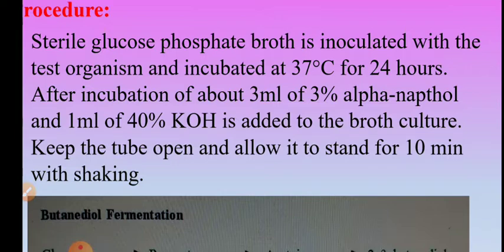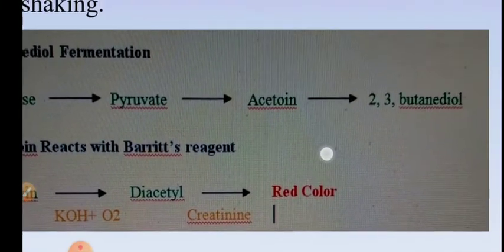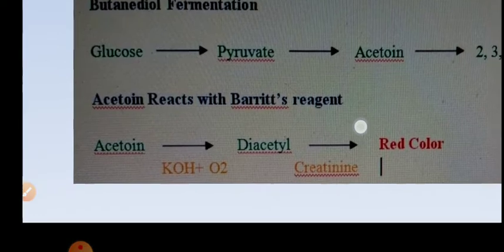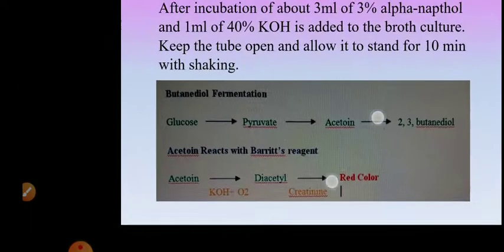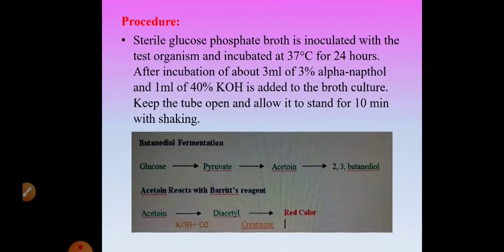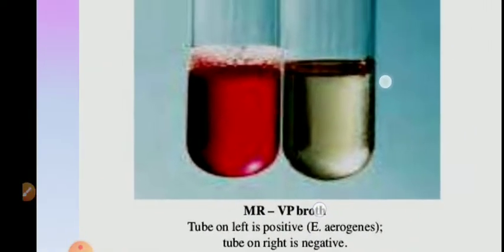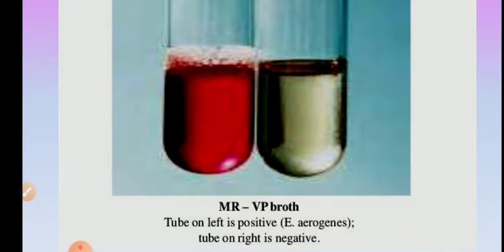Glucose is converted into acetoin or AMC, which is then reduced to 2,3-butanediol. The acetoin reacts with Barritt's reagent: acetoin is first converted in the presence of oxygen into diacetyl, which then reacts with the guanidine nucleus of amino acid arginine in the presence of alpha-naphthol and KOH, forming a red colored complex. Development of red color indicates VP test positive. If there is no red color — if a greenish-black or blackish-green color forms — VP test is negative. Enterobacter aerogenes (non-fecal coliform) gives VP test positive, while E. coli (fecal coliform) gives VP test negative.